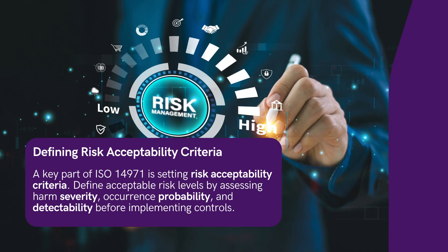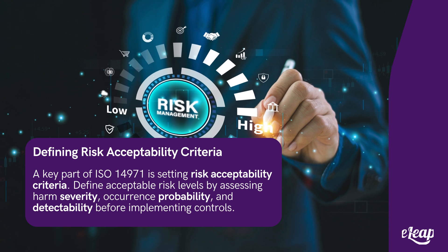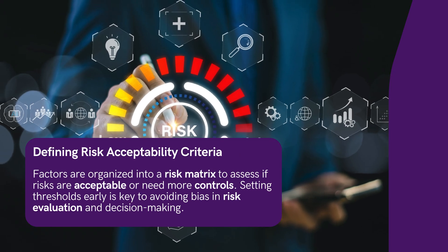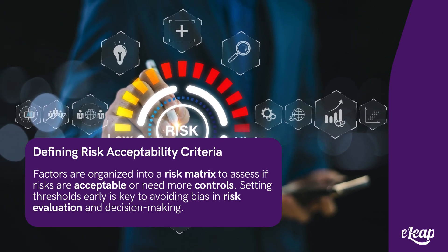One critical aspect of ISO 14971 is defining your risk acceptability criteria. This involves determining the acceptable levels of risk before risk controls are implemented. Typically, you will define the severity of potential harm, the probability of occurrence, and how easily the risk can be detected. These factors are often organized into a risk matrix to help assess whether the risk is acceptable or requires further controls. It's crucial to establish these thresholds early to avoid bias during risk evaluation.